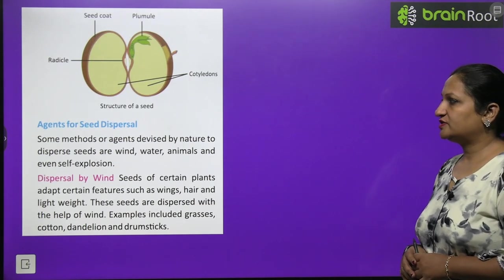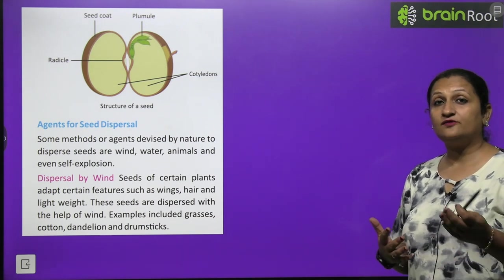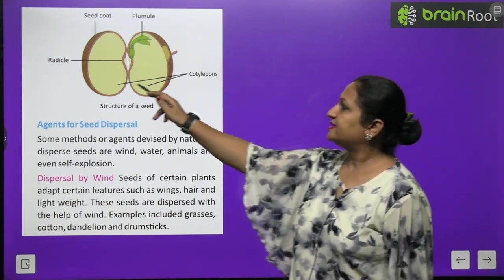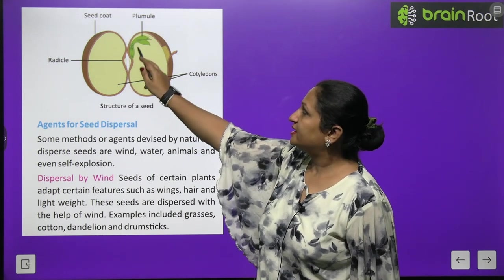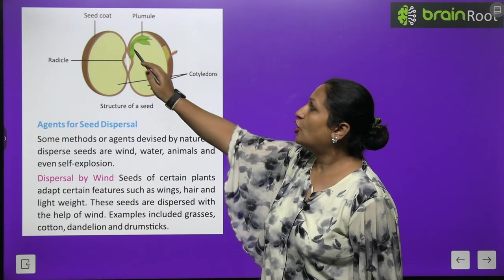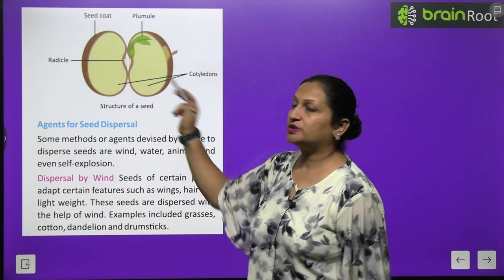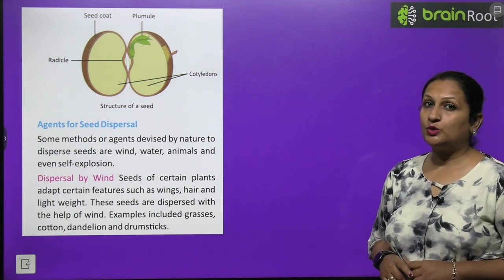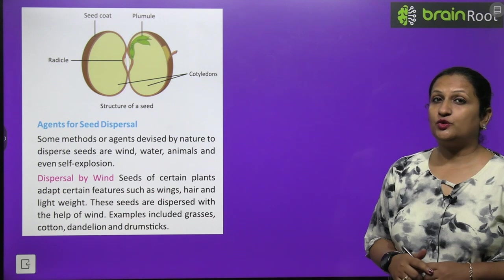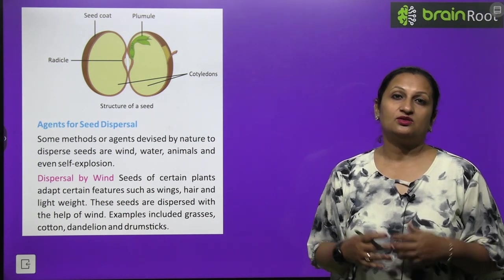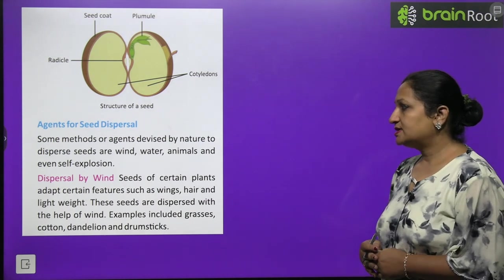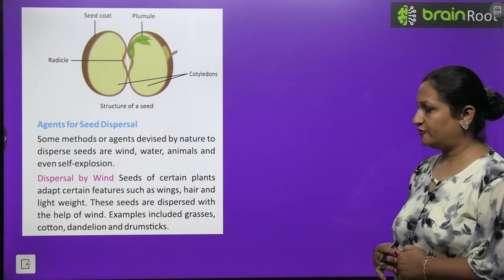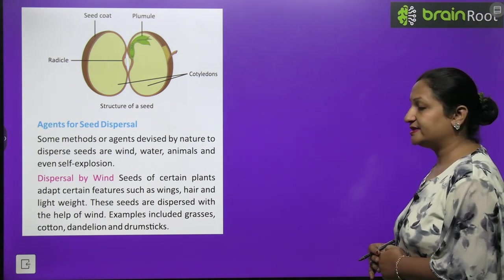Due to the lack of these requirements in a limited area, the seedlings may die. Therefore it is necessary to disperse the seed over a large area. Now agents for the dispersal of seeds children, there can be various agents like wind, water, insects, even human beings. You can see here children the structure of a seed. It's very easily visible that the seed has two cotyledons. It has a radicle and plumule which will grow into shoot system, and radicle which will grow into root system. And outside the seed is present the seed coat. As we were talking, this seed needs to be dispersed very much. Dispersal can be through wind. So such seeds should be very lightweight or they should have wings so that they can easily float in the presence of air. Certain plants adapt certain features such as wings, hairs and light weight. These seeds are dispersed with the help of wind. Examples are cotton, grasses, dandelion and drumsticks.